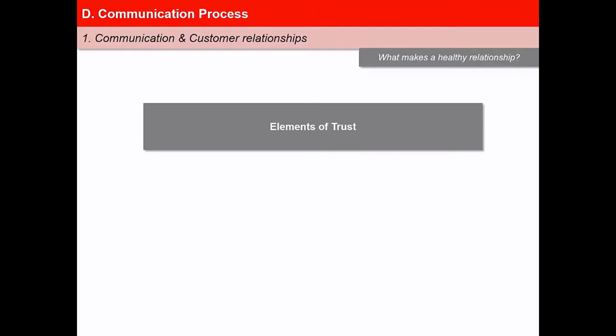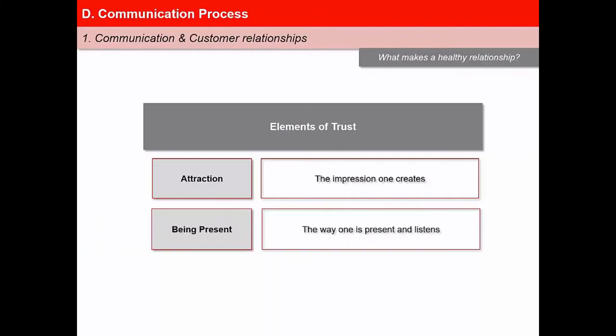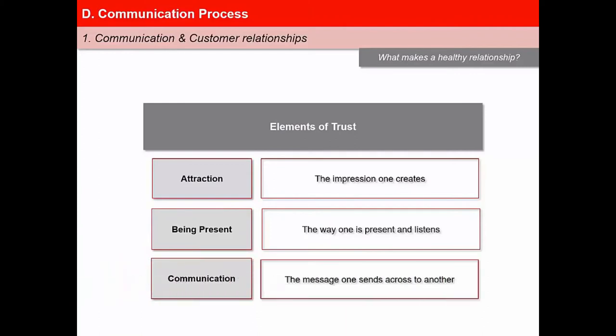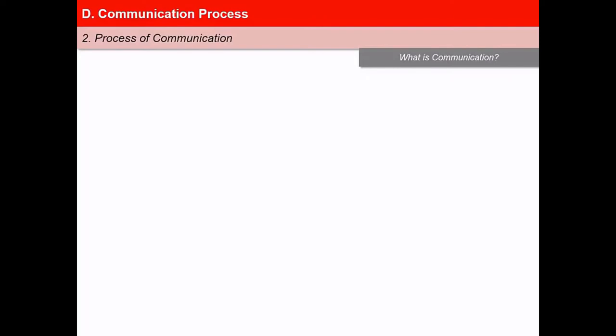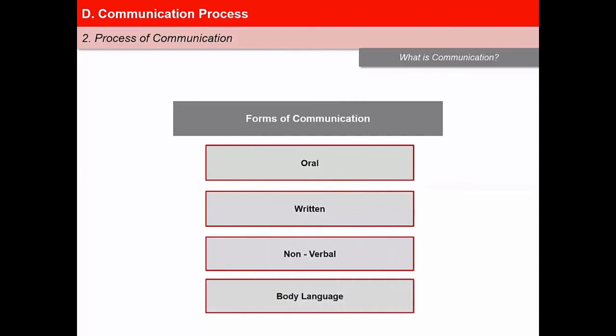Every relationship begins with attraction — one needs to simply be liked and must be able to build a rapport with the customer. The second element of a relationship is presence, which means being there when needed. The third element is communication, which is the message one sends across to another. It is a function of how one thinks and sees. All communications require a sender who transmits a message and a recipient of that message. The process is complete once the receiver has understood the message of the sender. Communication may take place in several forms such as oral, written, non-verbal, or using body language.